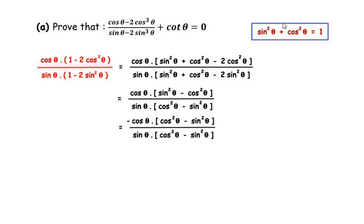Now we are going to make use of the trigonometric identity sin²θ + cos²θ = 1. In place of 1, we replace sin²θ + cos²θ. So in the numerator we get cos θ times (sin²θ + cos²θ − 2cos²θ), and in the denominator we get sin θ times (sin²θ + cos²θ − 2sin²θ).